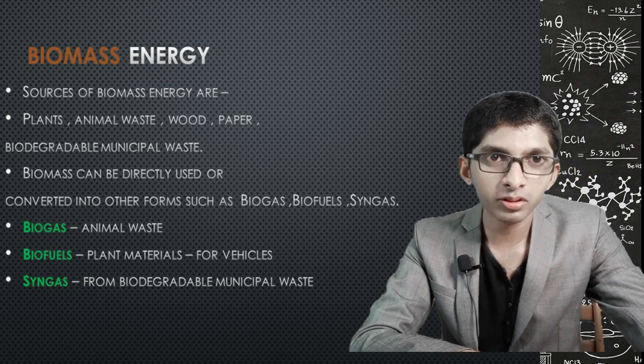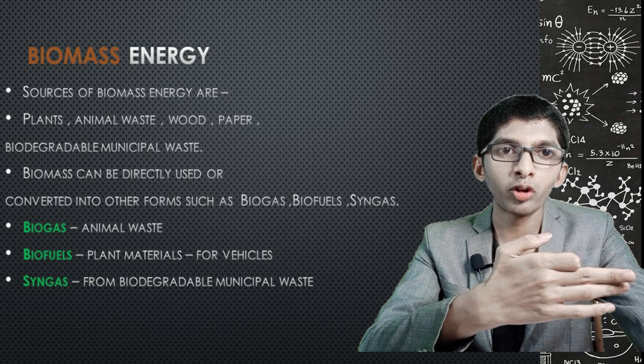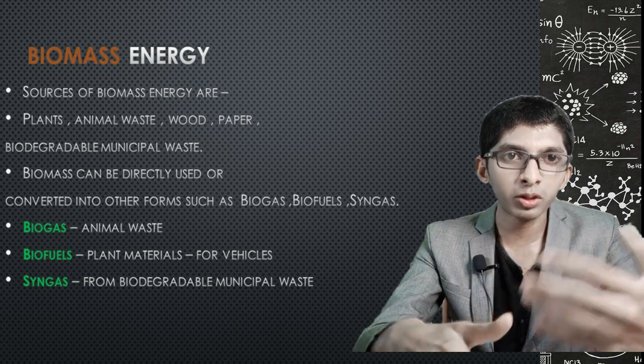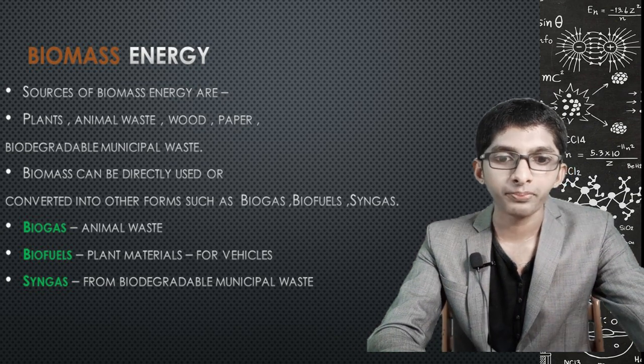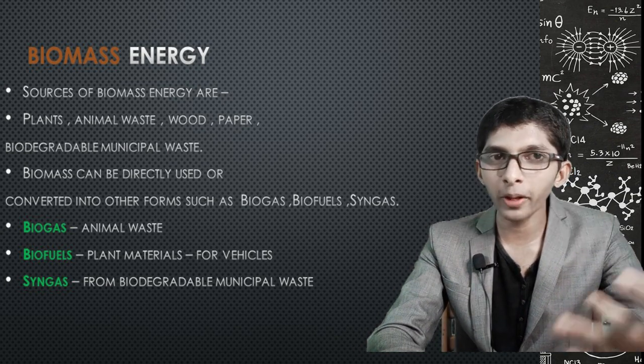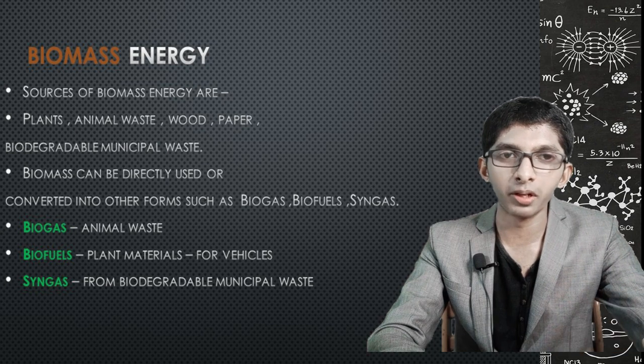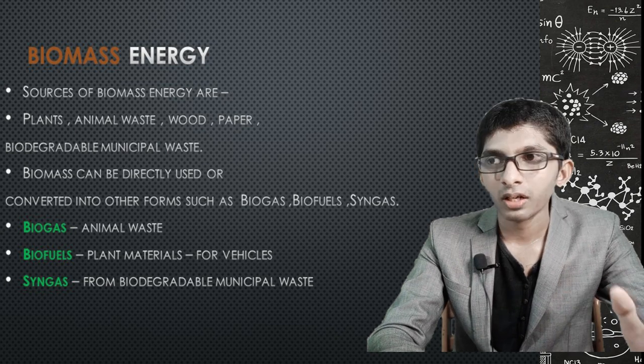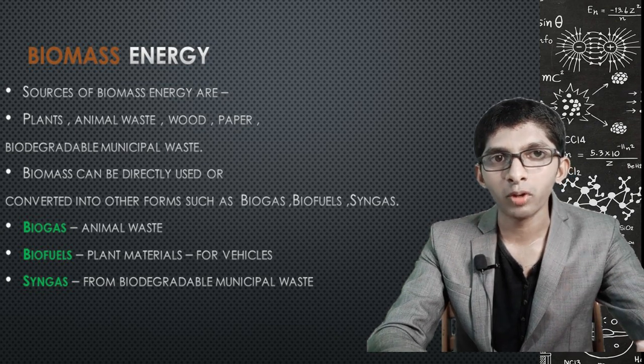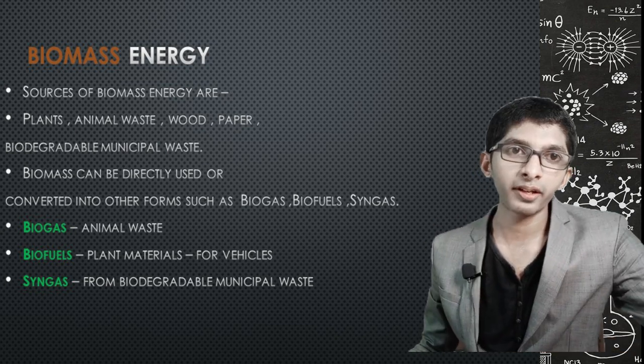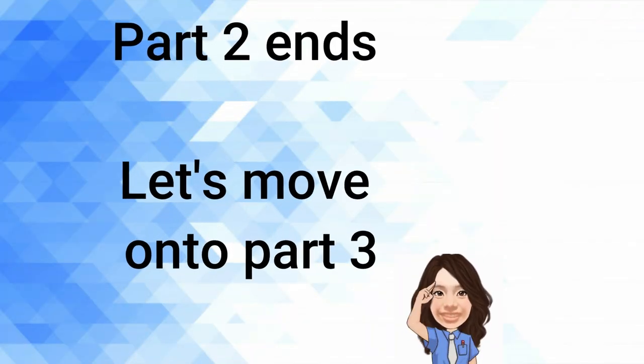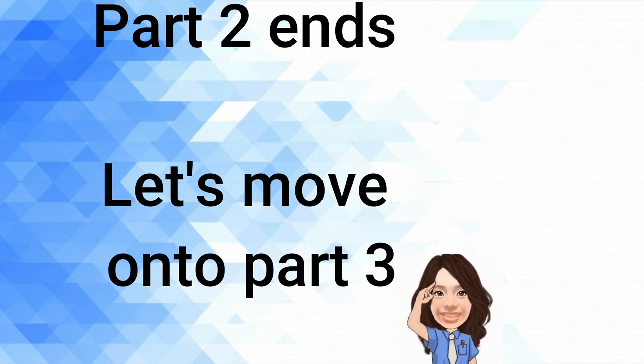We have two types of energy resources: non-renewable and renewable. Renewable energy is inexhaustible and includes wind, solar, hydro, biomass, and geothermal. Non-renewable energy is exhaustible and includes coal, oil, natural gas, and nuclear energy. This concludes Part 2 of General Issues and Environment Ecology. Part 3 is coming next. Bye.